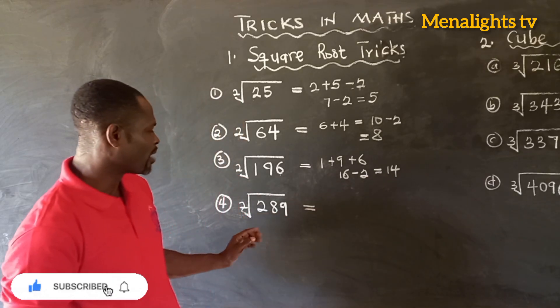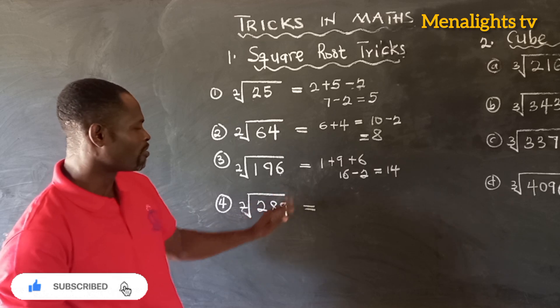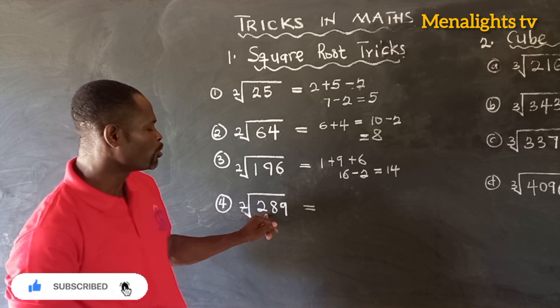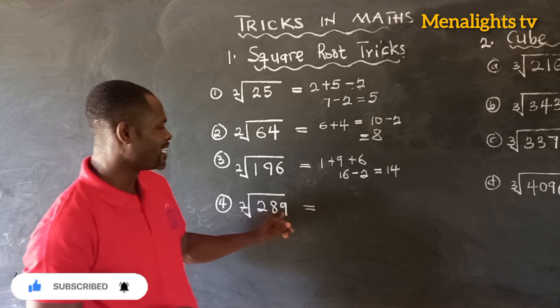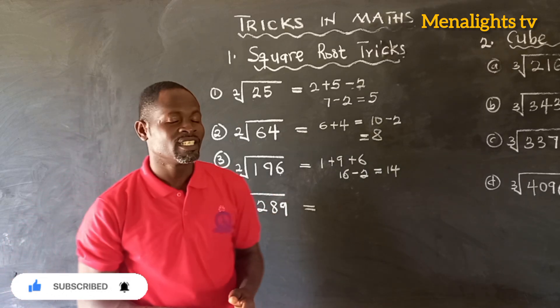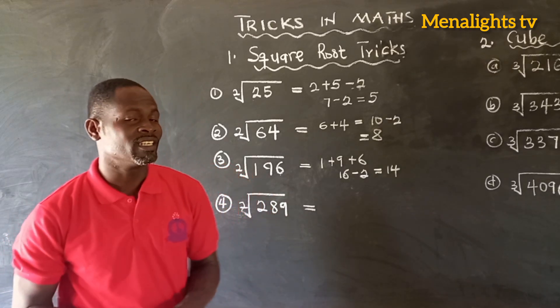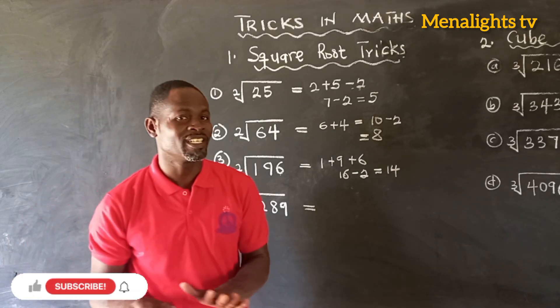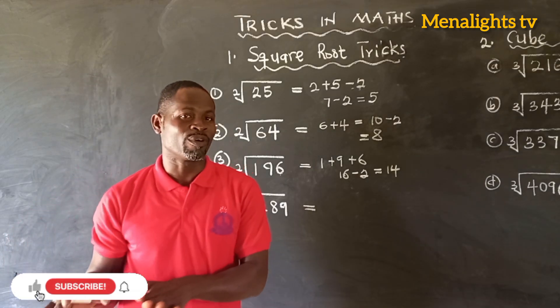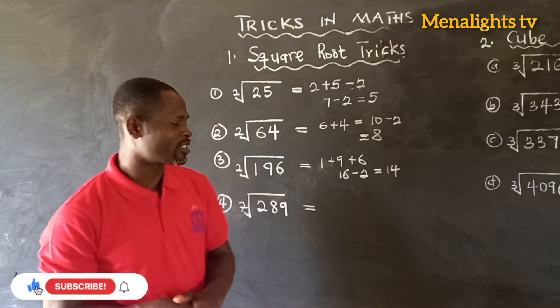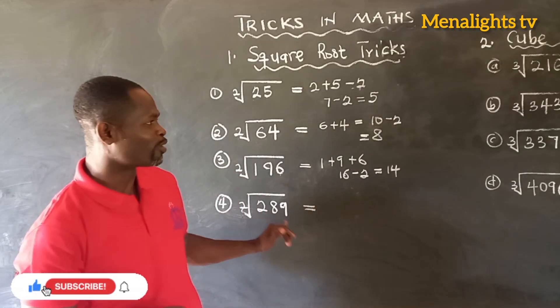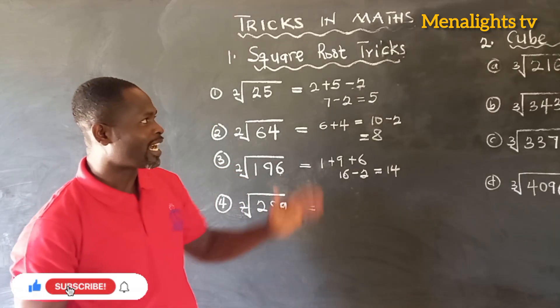Now we have another one — find the square root of 289. You are going to solve it and leave the answer for me in the comment box.